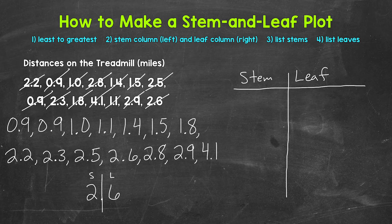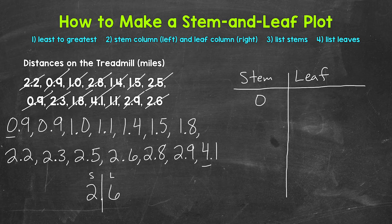Our next step is to list the stems. Before doing so, let's look at what our lowest stem will be and our highest stem will be. The lowest ones digit is zero and the highest is four. So we list our stems starting from zero and working up to four. Those stems represent the ones digits, and we include everything in between.